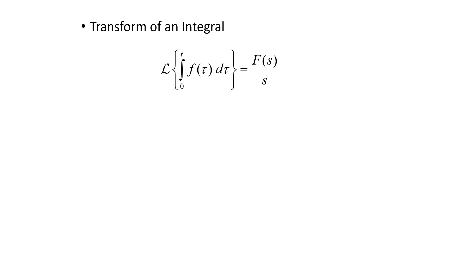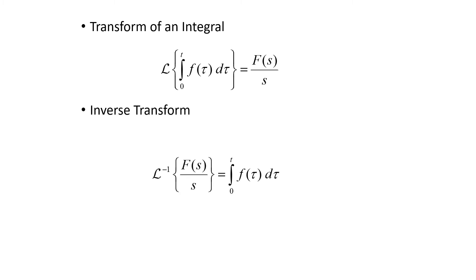Based on the result from our previous example, we can take the Laplace transform of any integral using that approach — we assume the integral is a convolution of 1 with whatever function is inside. This leads to the formula: the Laplace transform of the integral from 0 to t of f of tau with respect to tau equals the Laplace transform of f divided by s, where 1 over s comes from the Laplace transform of 1 and big F of s is the Laplace transform of the integrand. We can also invert this: the inverse Laplace transform of big F of s divided by s equals the integral from 0 to t of f of tau with respect to tau.